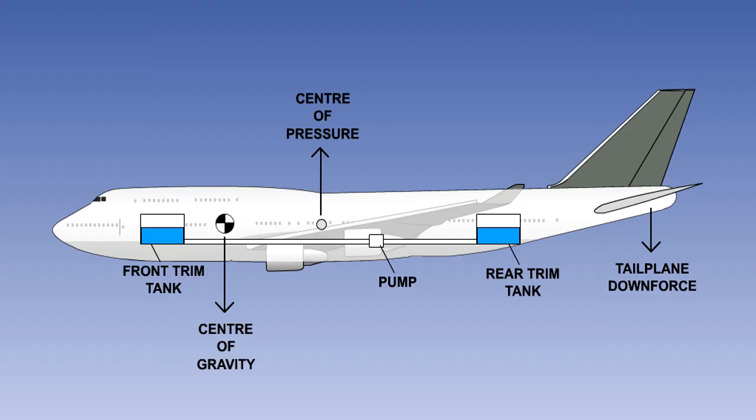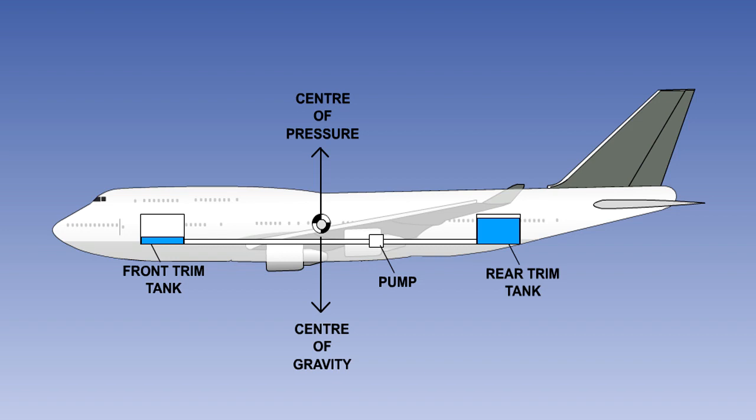In the graphic shown here the C of G is forward of the centre of pressure. Fuel is pumped from the forward to the aft tank moving the C of G aft until it reaches the centre of pressure when the pumping stops.